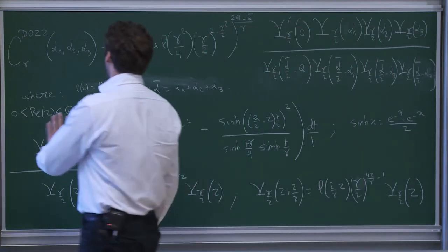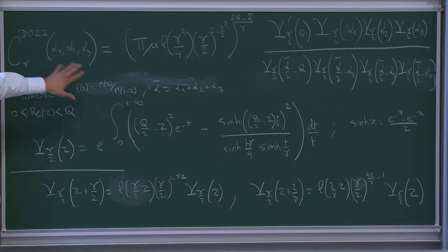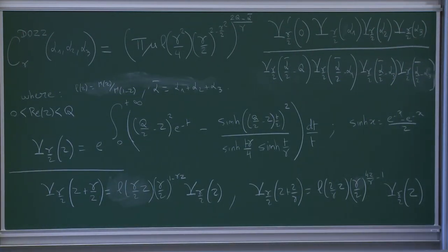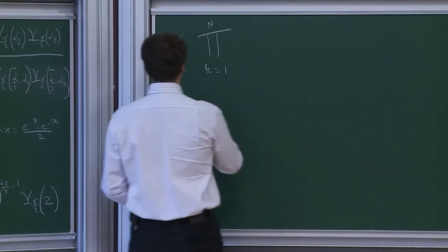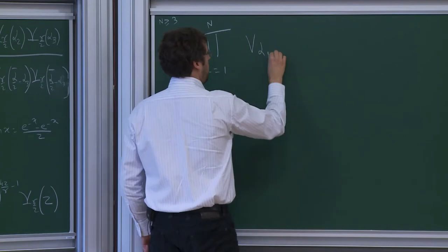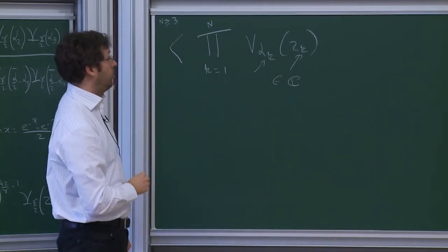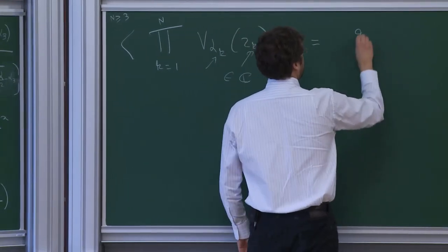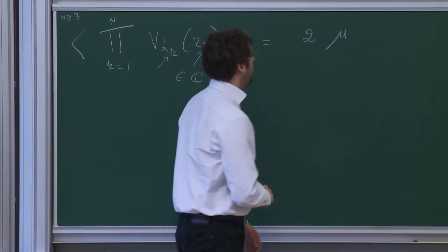In lecture one, we defined the three-point correlation function — the endpoint correlation function for N greater or equal to 3. If I take points in the complex plane and weights alpha_k satisfying the extended Seiberg bounds, we defined an endpoint correlation function. Here mu is a positive parameter which plays no role in the theory — it's a scale-invariant theory. The Liouville theory depends on two parameters: gamma, which controls all the conformal invariance properties, and mu, the positive cosmological constant. Gamma belongs to (0,2) in these lectures.